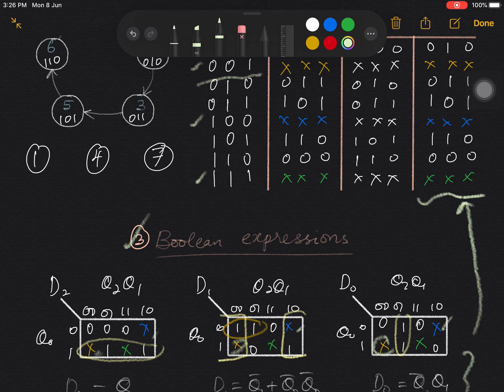And the green don't care, this one, this, and this, corresponds to the state 7. All of them, remember that all of them are the unused states. Let me clear the scribble first.